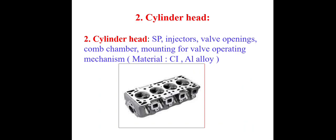Next is the cylinder head, which is one of the important components of the IC engine. There is a provision for fitting a spark plug in the case of a petrol engine. In the case of a CI engine, there is a provision to fit the injector, valve openings, combustion chamber, and mountings for valve operating mechanism. This is also made by cast iron and aluminum alloy. Look at this diagram of the cylinder head.